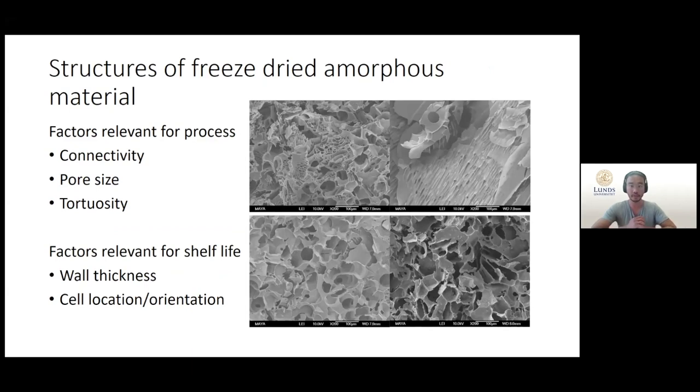So these are some pictures of freeze-dried material, of amorphous material. In this instance it's maltodextrin. We can clearly see that there is a difference between the structures but it's not easy to draw any conclusions on pore size or wall thickness and this is of course the reason we need X-ray tomography. I will go into details on what kind of structures we see in these features later on.